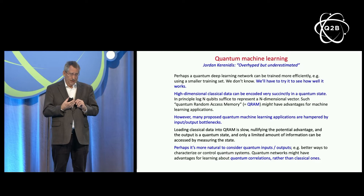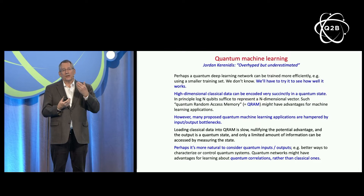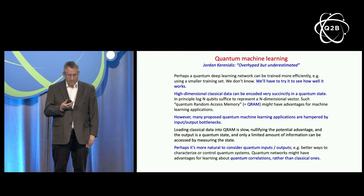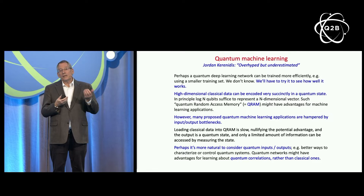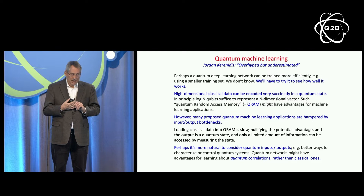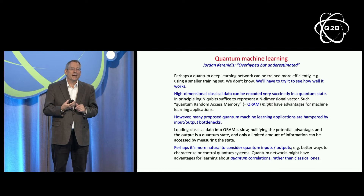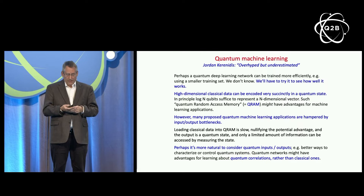What we get as output is a quantum state succinctly encoded, and we can only get a modest amount of information per shot when we measure it. To characterize the output in detail, we would have to run the routine many times. It might be more natural to think of quantum machine learning as a task where both input and output are quantum — applying it to something like recognizing exotic quantum phases of matter or finding better ways to control quantum systems. A quantum advantage for learning some probability distribution will likely occur when quantum entanglement underlies the distribution in question.